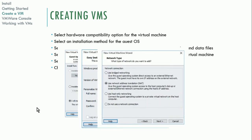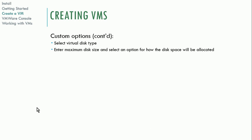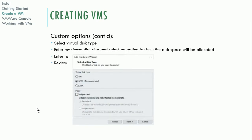This is where you select the networking options, which is very much like Oracle VirtualBox — the same terminology. You can choose bridged or NAT, just like in VirtualBox. For custom options, you can select the disk type, the maximum disk size, and whether it's going to be dynamic or a fixed size. You can review the settings and select whether it's IDE, SCSI, or SATA.